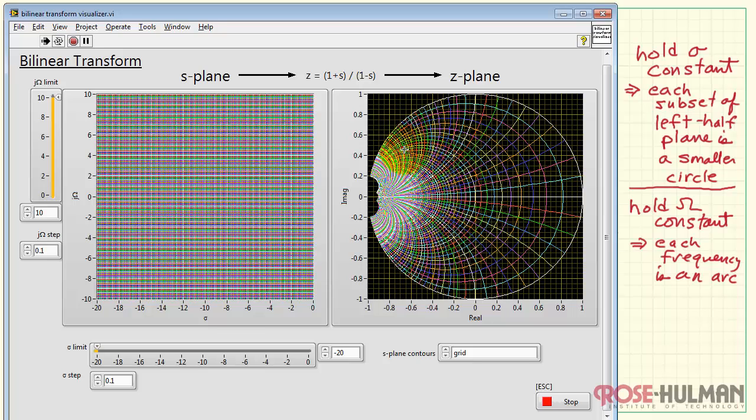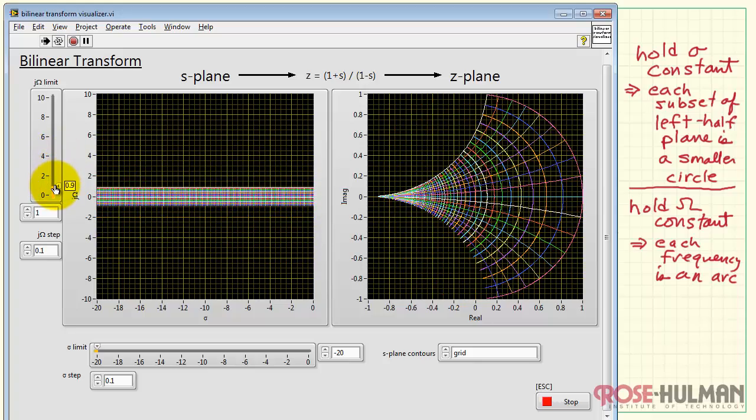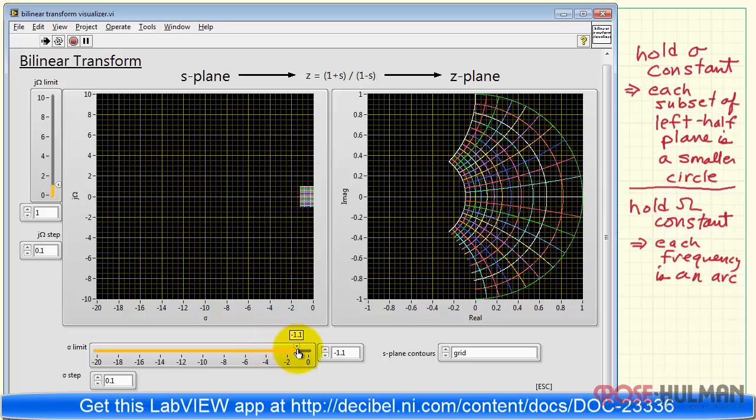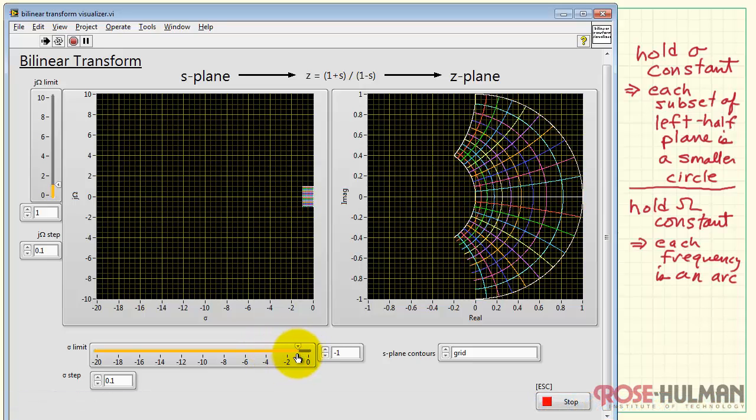We see that the high frequency areas all map into the left half side of the z-plane as well. Let's try a couple other quick experiments. Here I'm looking at a fairly limited range of frequencies, but a wide range of sigma values. We see how that maps into the z-plane.